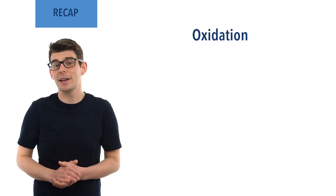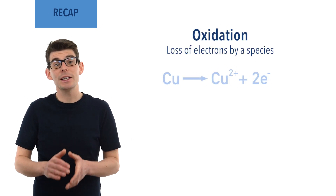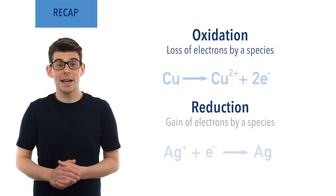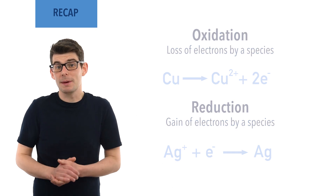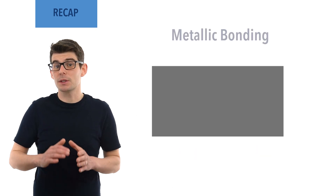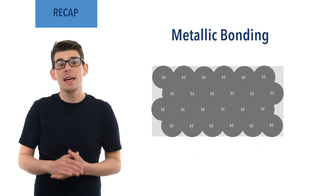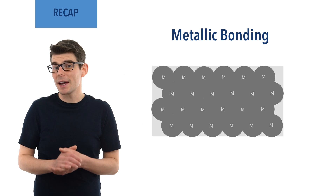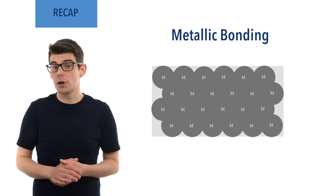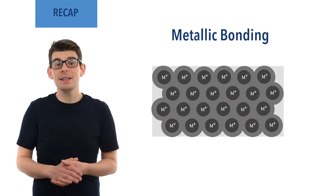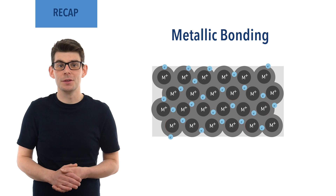Before we talk in detail about electrochemical cells there are a couple of essential ideas you need to be comfortable with. Oxidation refers to the loss of electrons by a species and reduction the gain of electrons. In solid metals, atoms are tightly packed together in a regular lattice with the atoms existing as positively charged ions surrounded by a sea of delocalized electrons.